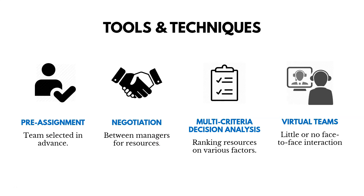Now let's talk about acquiring resources and the tools of that process. Resources could be pre-assigned, meaning team members are selected in advance with no real choice of who to involve. There's also negotiation, which is important in functional organizations where you may have to negotiate with functional managers to get the resources you need. Then there's multi-criteria decision analysis — ranking potential team members on various factors to determine who would be the best fit. And then virtual teams, which is another way to acquire a team — done virtually with little or no face-to-face interaction.